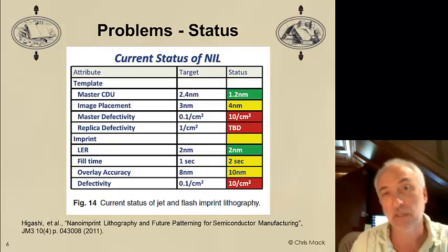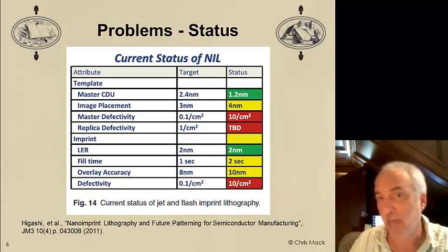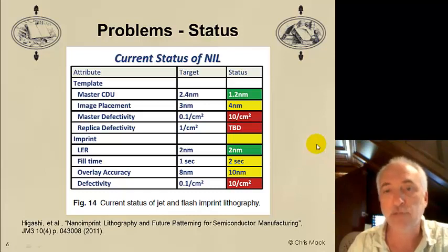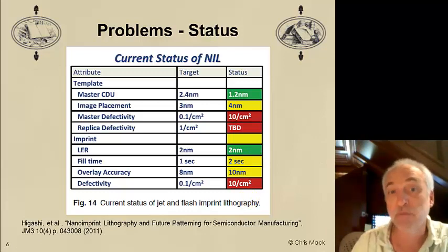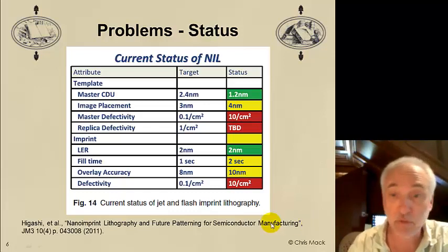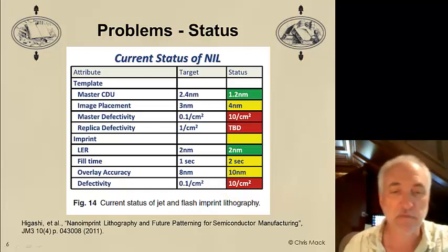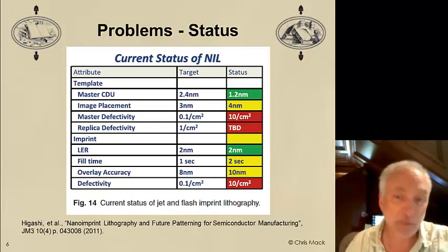Nano imprint is being considered for semiconductor manufacturing. Toshiba has been working on a project to see if nano imprint can meet semiconductor manufacturing specifications. Here's a recent snapshot of the status — green items meet spec, yellow are almost there, and red still have problems. The biggest problem shown in red is defectivity. Currently, the defectivity is on the order of 10 defects per square centimeter, but for manufacturing — specifically flash manufacturing — we need something like 0.1 defects per square centimeter. So we have two orders of magnitude to go, though progress has been made and hopefully more will follow.